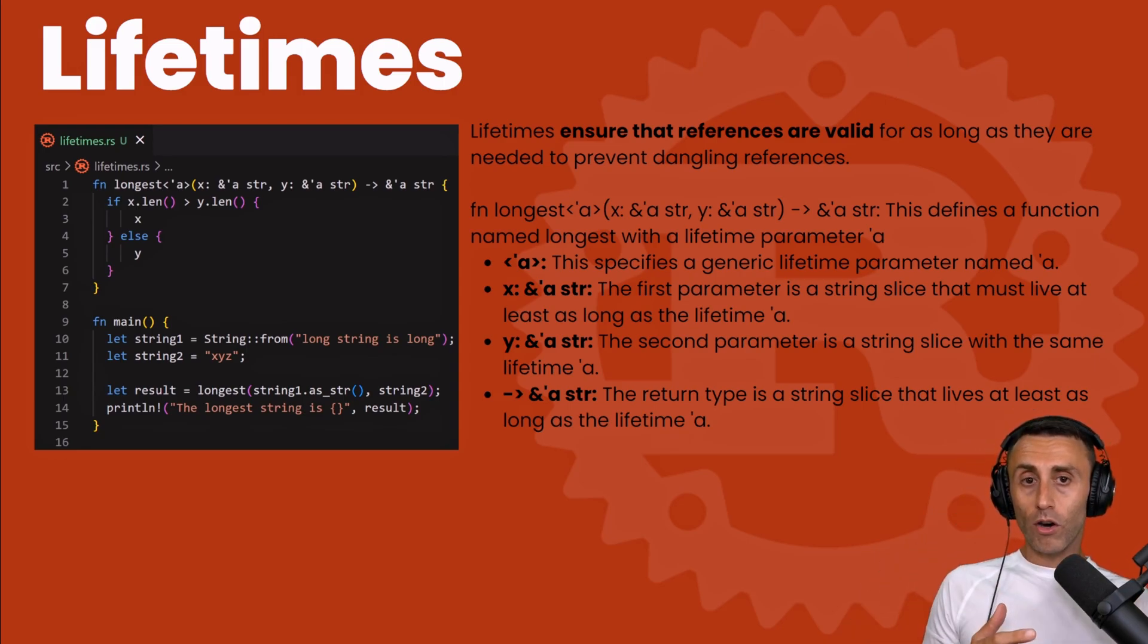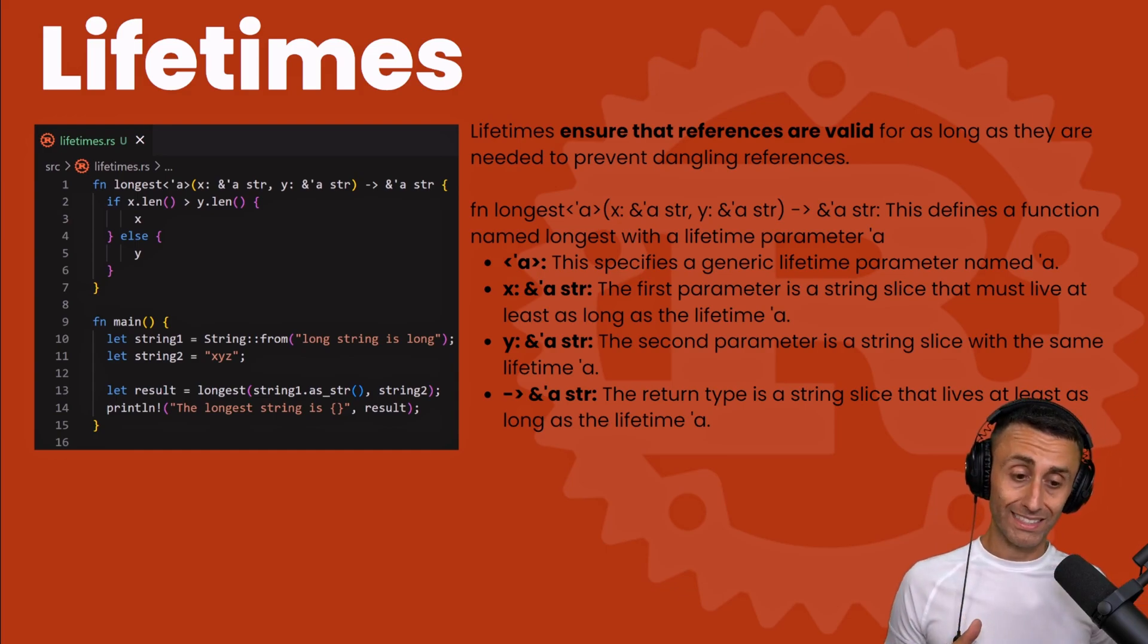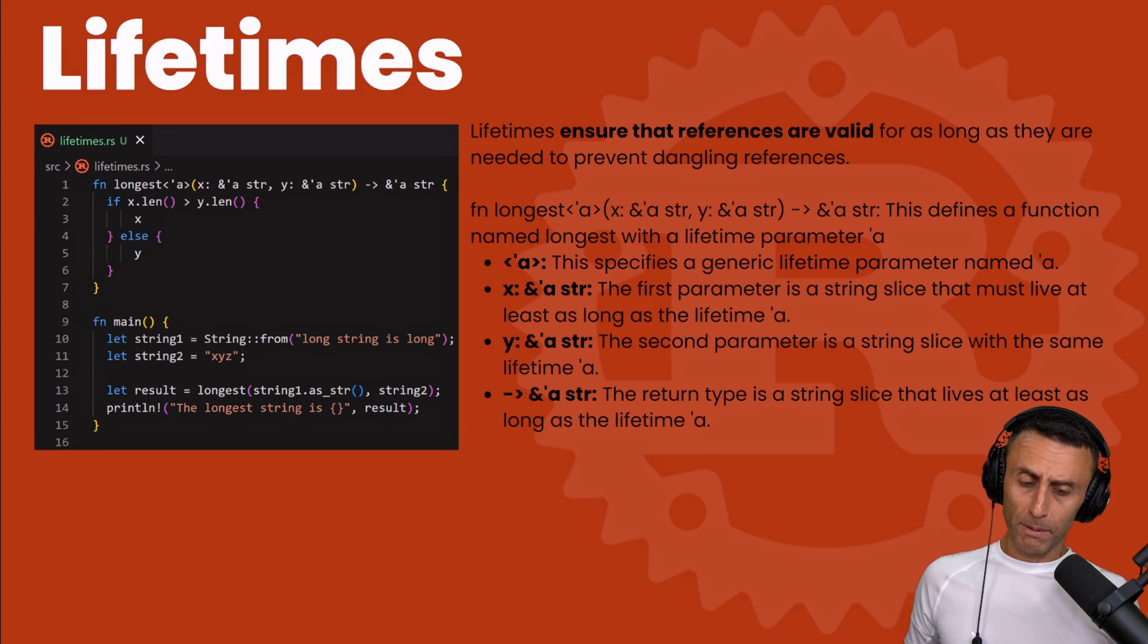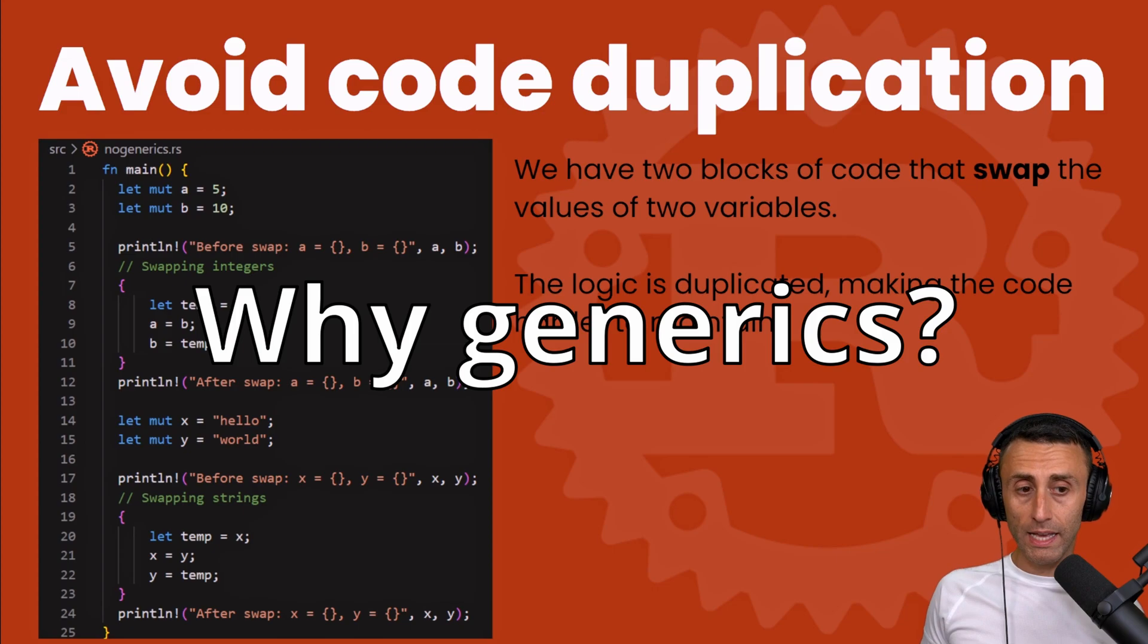So this is to avoid having a dangling reference when we are calling this function. This is a more advanced concept, but this is just to have an idea that this is basically to avoid code duplication and to ensure that the references are still valid when they are needed. Generics, traits, and lifetimes are used to avoid code duplication.